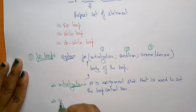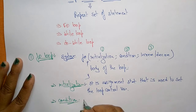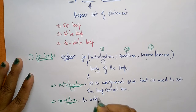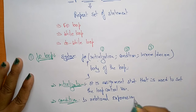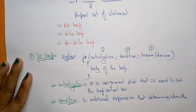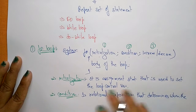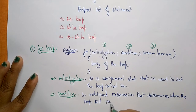Next is condition. The condition is a relational expression that determines when the loop will exit. So this condition tells when the loop has to exit.